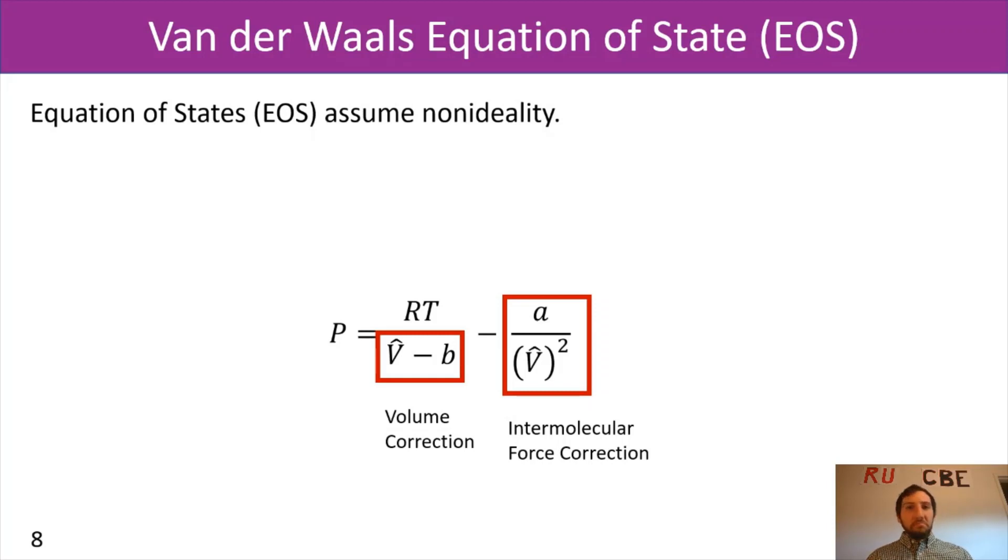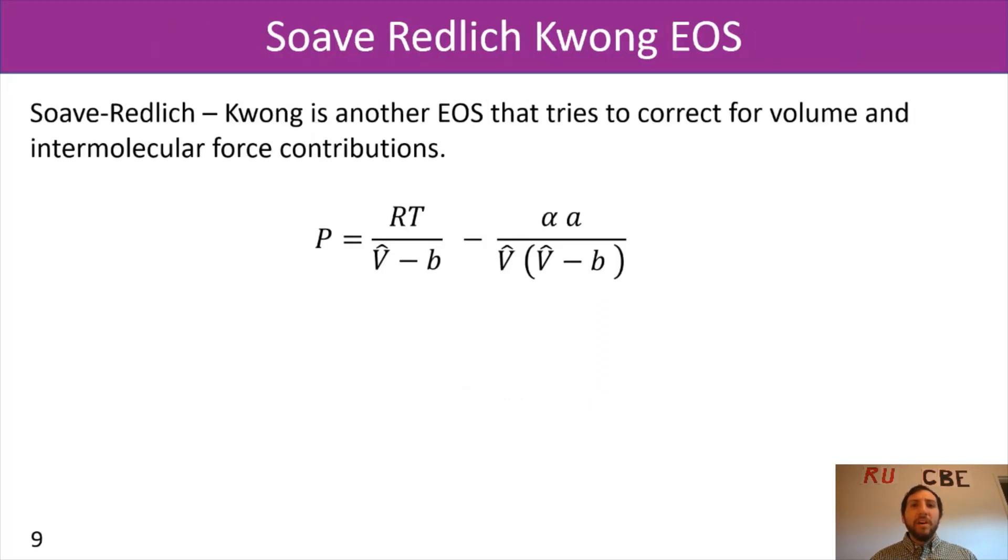Another equation of state that you might see, because there's a ton of equations of state, but this is another one that's pretty common, is the Soave-Redlich-Kwong equation of state. This is another one with a different form, but similar idea. It's trying to correct for both your volume and intermolecular force contributions. As you see, it's not that different from the Van der Waals equation of state. You got this volume correction term and you have an intermolecular force correction term. Soave-Redlich-Kwong is just trying to do additional stuff for correcting.